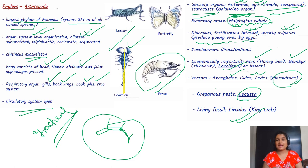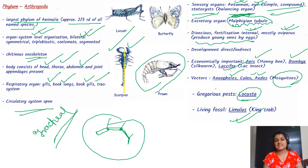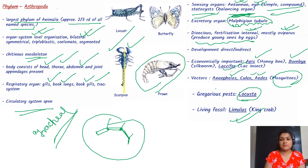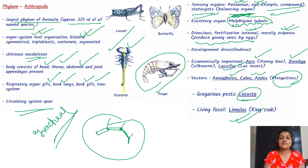This covers everything from NCRT for phylum Arthropoda. I am trying to make very intensive notes from NCRT, taking each and every line so that you don't miss any important point.